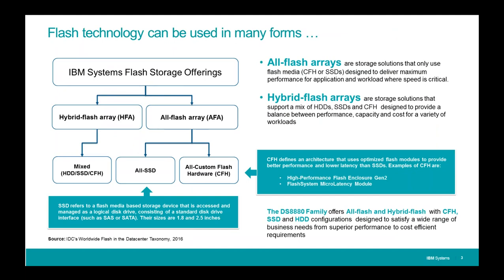The IBM DS8000 — the DS8880 in particular — fits into all flash offering categories. We have hybrid flash arrays with mixed solid-state drives, which are flash in a disk format fitting existing disk slots. We have custom flash topologies such as the IBM Flash System, and in the DS8880 we have the high-performance flash enclosure, now Gen 2. We've had the Gen 1 before and now we're going to Gen 2. For all-flash arrays, we can have all SSD or custom flash hardware — in our case the high-performance flash enclosure Gen 2.